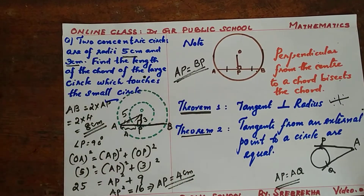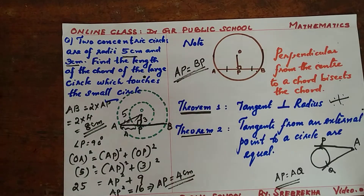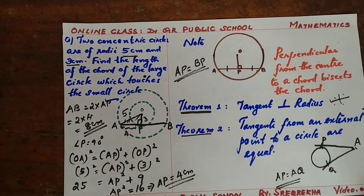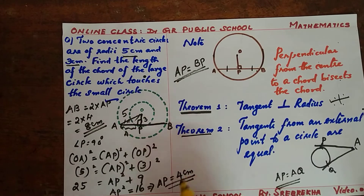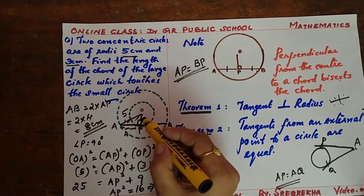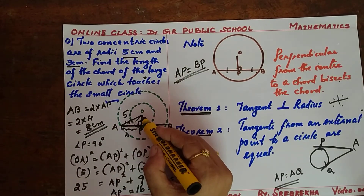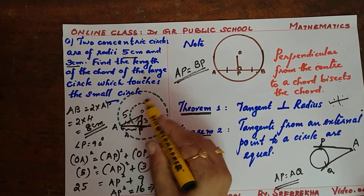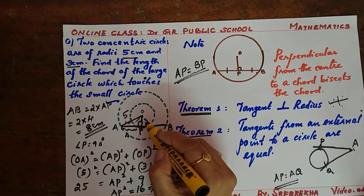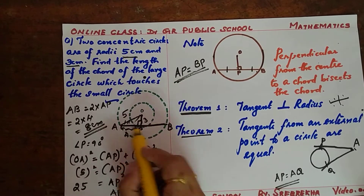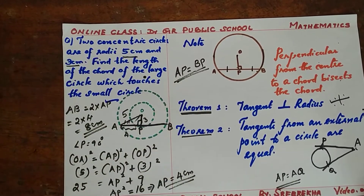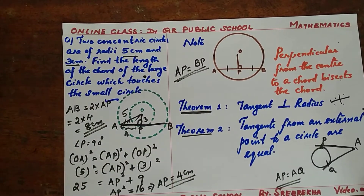This is a very important question. One or two more questions can be asked from this section. If asked for a one-mark question, just do the simplification in rough and write the answer. For a two-mark question, draw the figure and find the length of the chord of the larger circle.